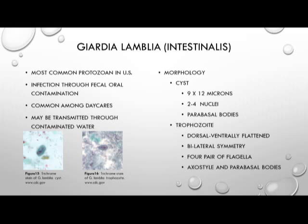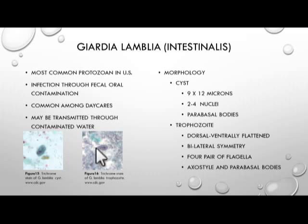It is very common amongst daycares. The cyst stage on the bottom left measures 9 by 12 microns with 2 to 4 nuclei and a parabasal body. On the bottom right, figure 16, we have a trophozoite with a dorsal-ventrally flattened bilateral symmetry with 4 paraflagella sticking off the posterior end, and an axostyle as well as a parabasal body, with bilateral symmetry and the 4 flagella sticking off the posterior end.